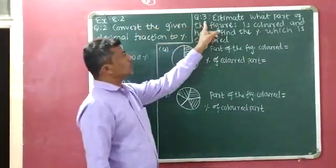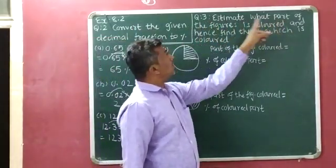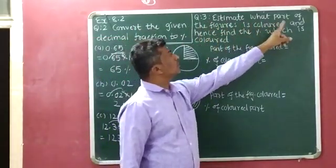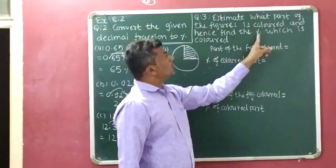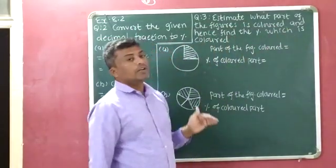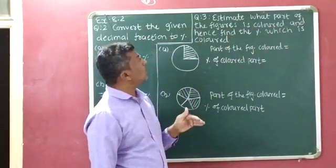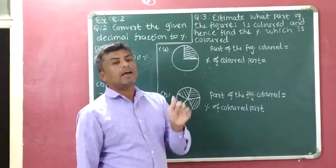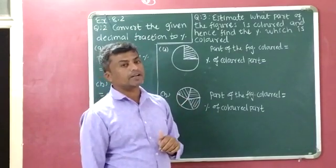Now question number 3: estimate what part of the figure is colored, and hence find the percentage which is colored. Here we have to identify what part of the figure is colored and then find its percentage.